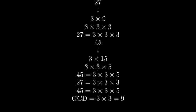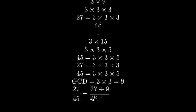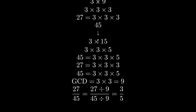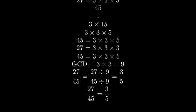To simplify the fraction, we divide both the numerator and denominator by the greatest common divisor. 27 divided by 9 equals 3. And 45 divided by 9 equals 5. Therefore, 27 over 45 simplifies to 3 over 5.